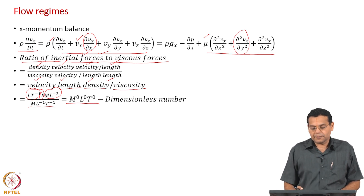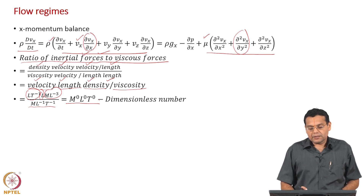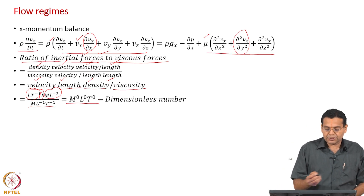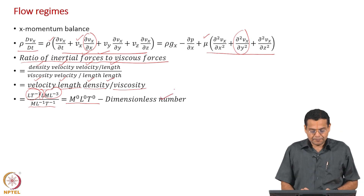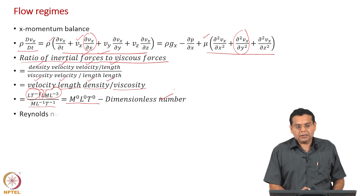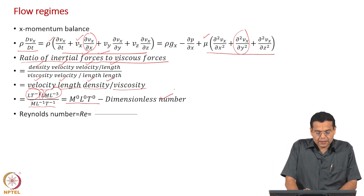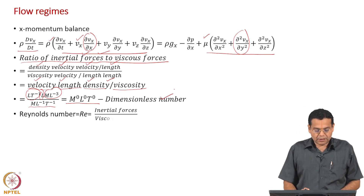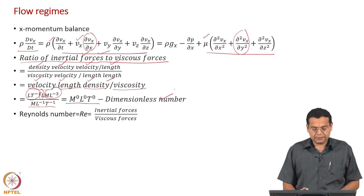Since dimensions of all terms in a conservation equation must be the same, the ratio is dimensionless. This dimensionless number is called the Reynolds number, named after Osborne Reynolds, and Re equals inertial forces divided by viscous forces.